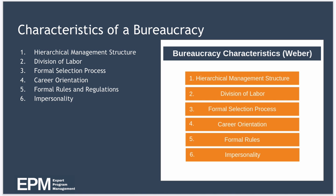Weber identified six characteristics of a bureaucracy. The first characteristic is a hierarchical management structure, which is one of the hallmarks of a bureaucracy. In a hierarchy, each level within the organisational structure controls the level below but is controlled by the level above. Power and authority are clearly and explicitly defined for each position within the hierarchy, and job responsibilities and duties are also clearly defined for each and every position.